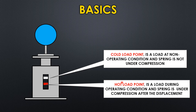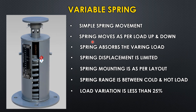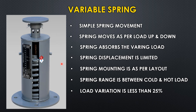A variable spring has a simple spring movement. The pipe is placed on top and based on upward and downward movement, the spring compresses and expands, and the load varies accordingly. Key points: the spring moves up and down as per the load, absorbs the weight load, and spring displacement is limited — variable springs are used only where displacements are less or very limited. The mounting varies by layout location, using hanger or floor mounting as needed. Load variation must be less than 25% to use a variable spring.